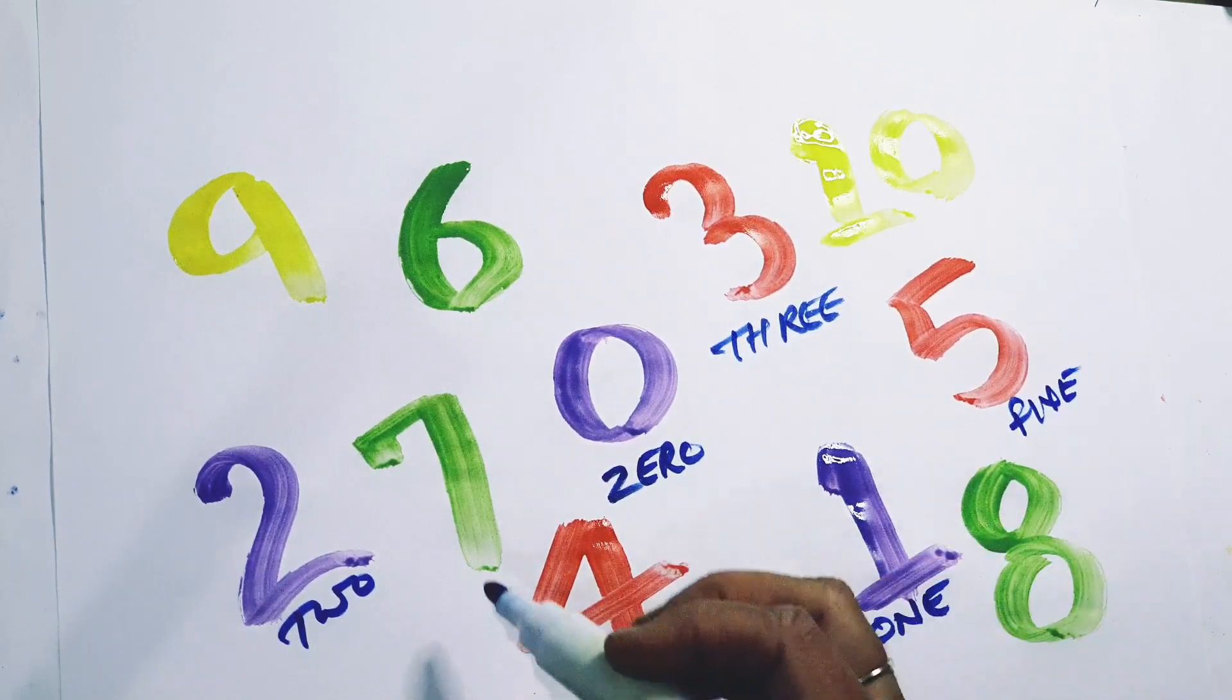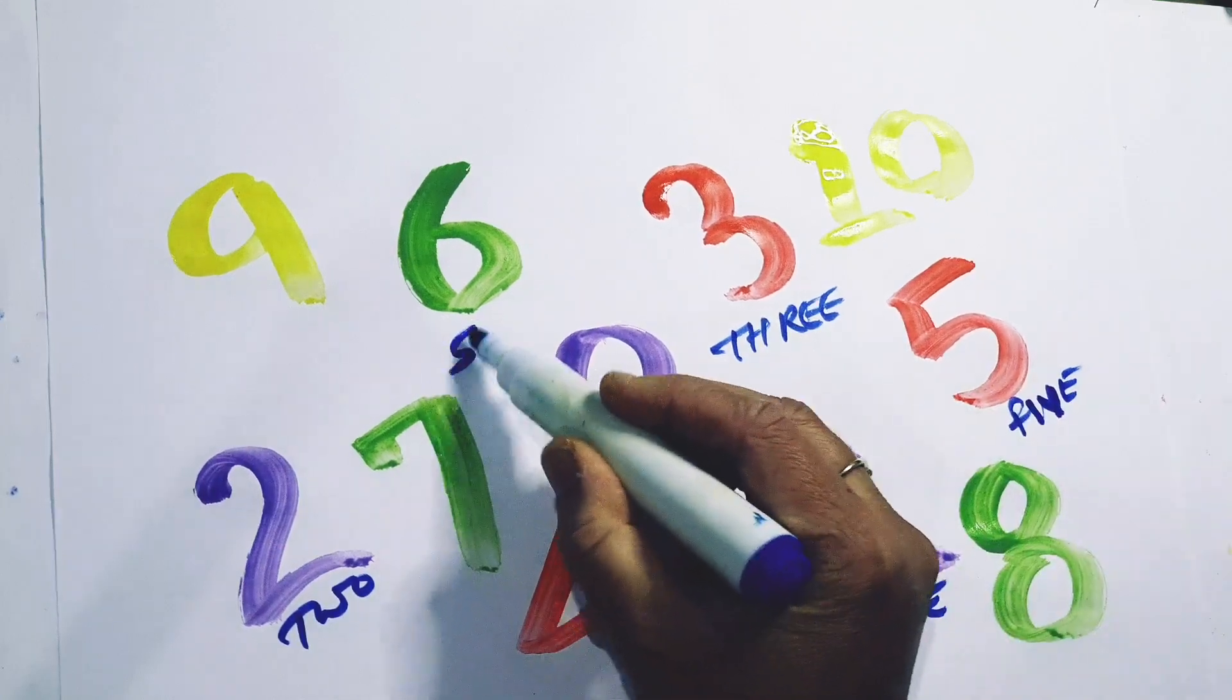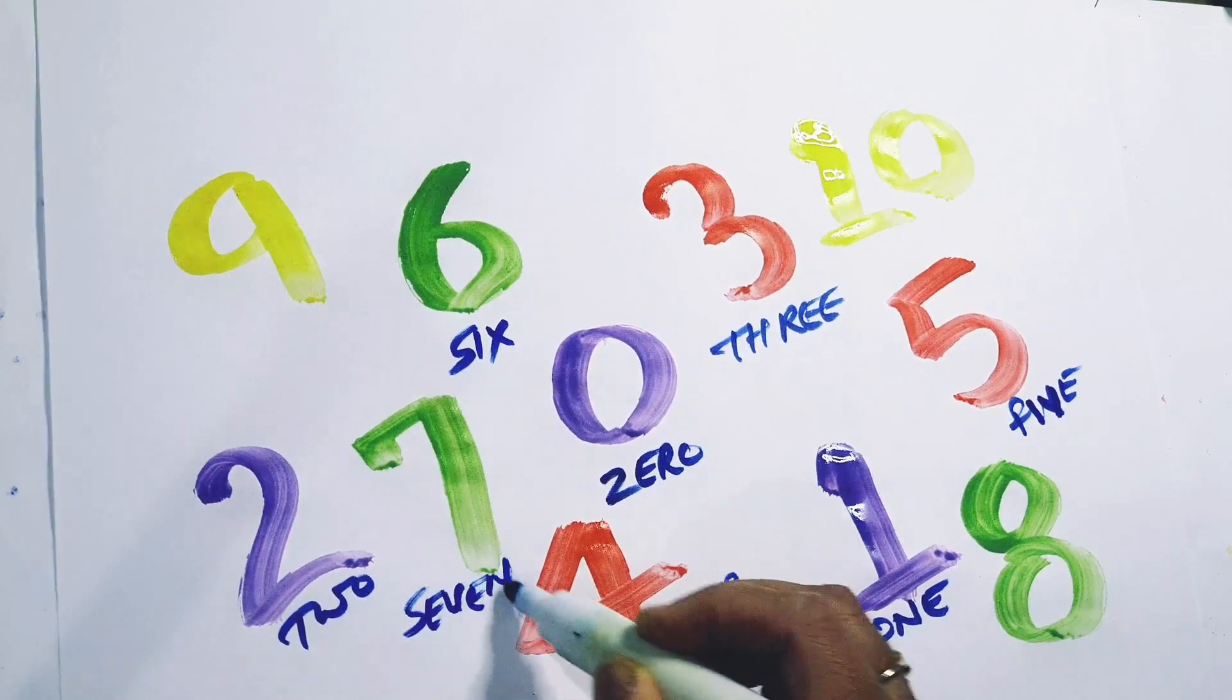F-I-V-E, five. S-I-X, six. S-E-V-E-N, seven.